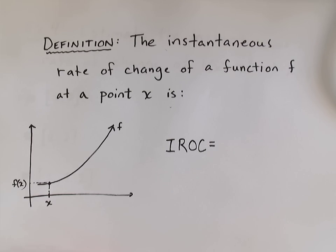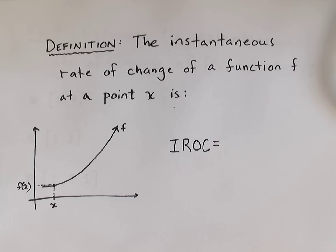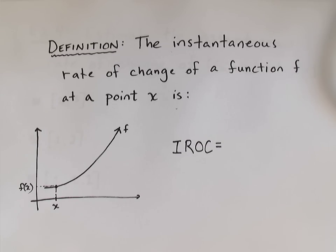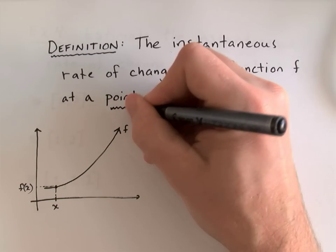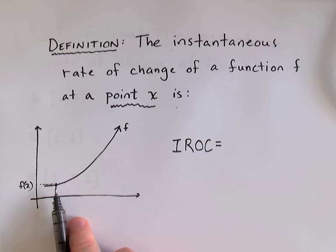Okay, another definition. This time without an octopus. The instantaneous rate of change of a function f at a point x is. So, what we're trying to do now is we're going to try to change the game. Instead of talking about the rate of change of a function over an interval, we're going to look at the instantaneous rate of change at a single point. How fast is the function changing at one particular point x?